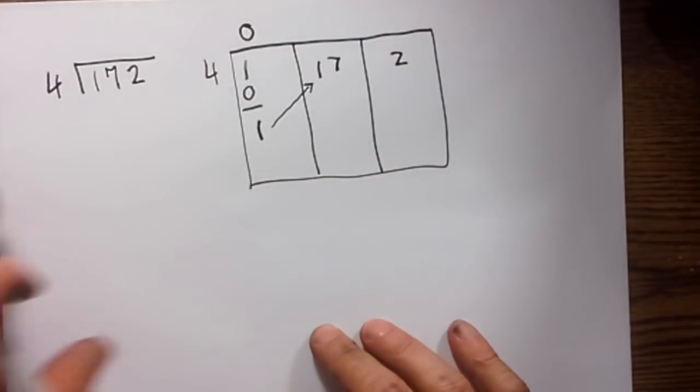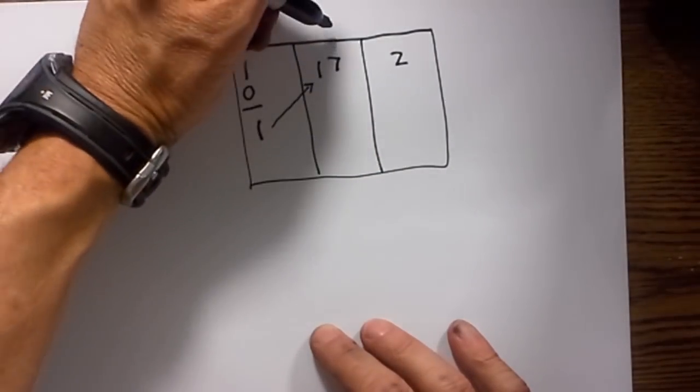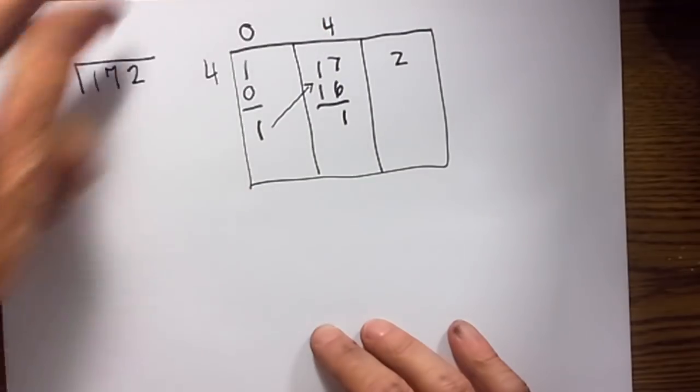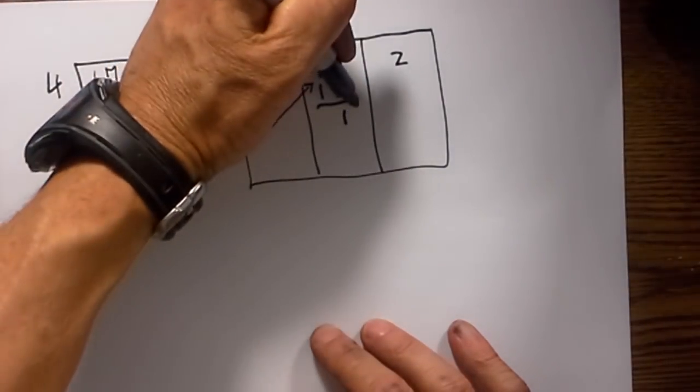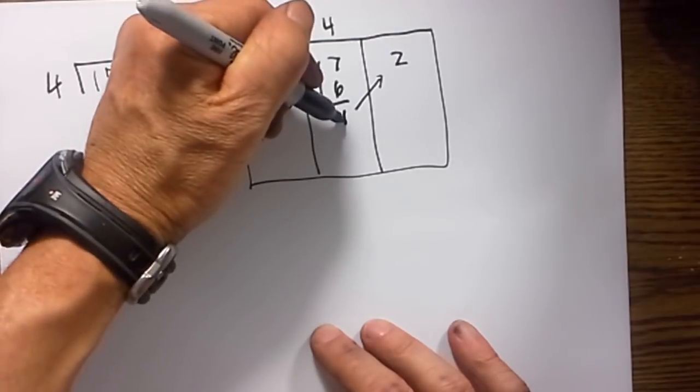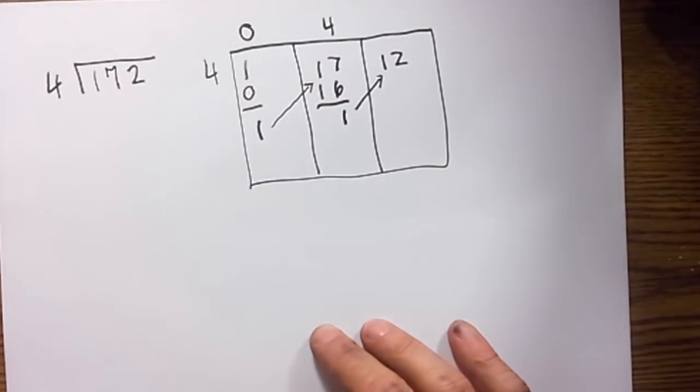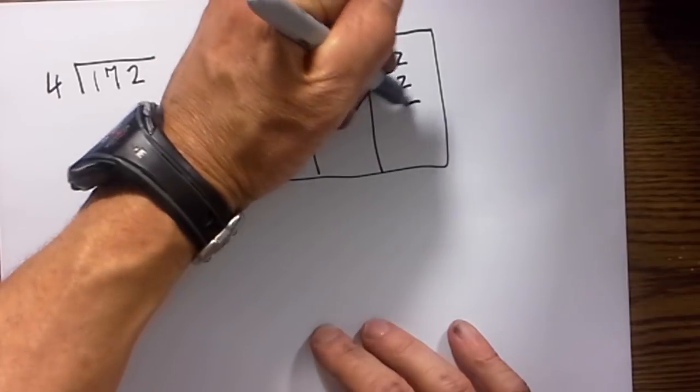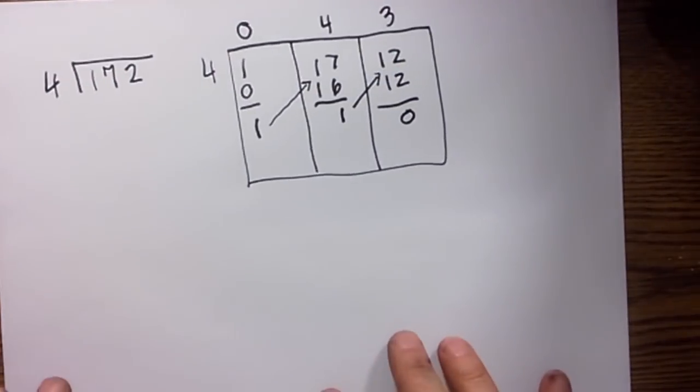Notice how it's nice and neat. Four will go into 17 four times, and that gives you 16 with a remainder of one. You then move the one to the one column. Four goes into 12 three times and you have a remainder of zero.